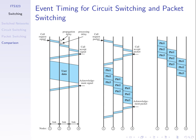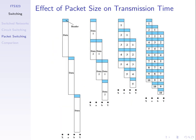There's one more concept relevant to packet switching: how long it takes to transfer data, focusing on the data transfer itself rather than connection setup. This illustrates the trade-offs involved with packet size. In general, how big should a packet be, and what are the advantages of big versus small packets?